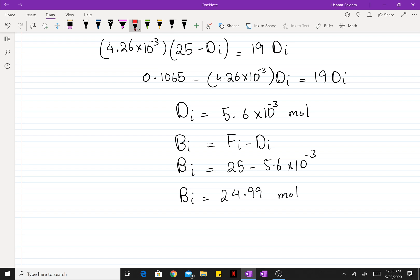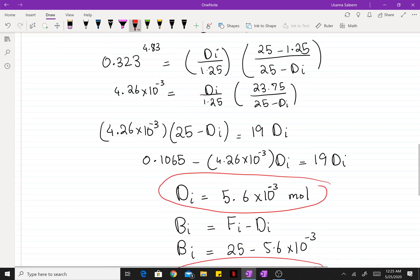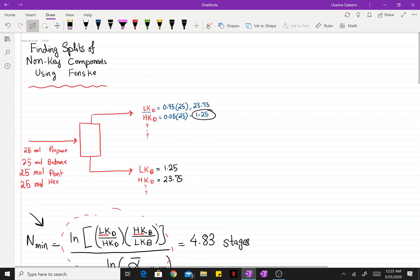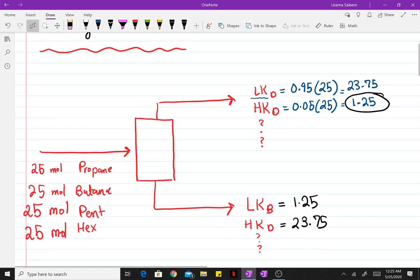So that's the split of pentane in our distillate and the bottom. Now I just want to point out one thing. Since pentane is the heavier non-key component, the majority of your heavier non-key components are always going to end up in the bottoms. So as we can see here, a very tiny amount of pentane goes into the distillate, and almost all of it goes to the bottom.